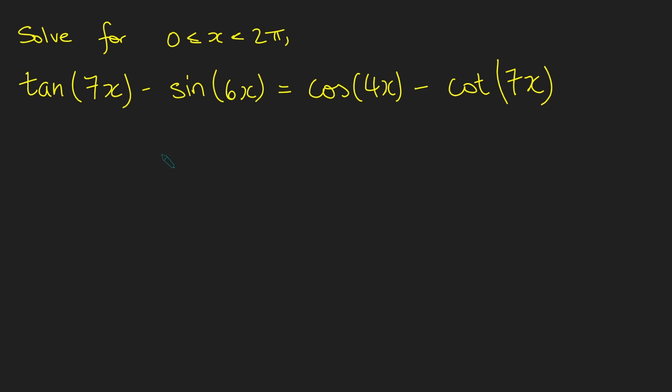Okay, so the first thing I'm going to do is bring the tan and the cot onto the left-hand side and bring the sine onto the right-hand side and write everything in terms of just sine and cos. So the right-hand side of my equation is just going to be sine of 6x plus cos of 4x. And on this side, I'm going to get tan of 7x, which is sine of 7x over cos of 7x plus cot of 7x, which is cos of 7x over sine of 7x.